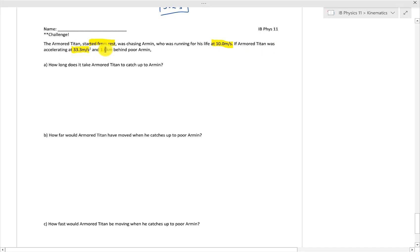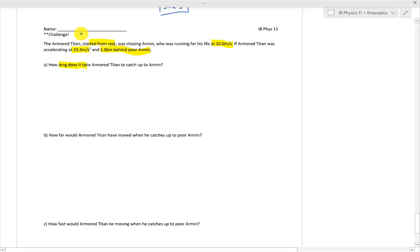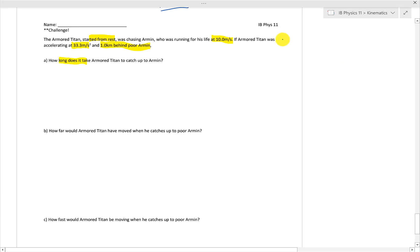If the Armored Titan was accelerating at 33.3 meters per second squared, and just a kilometer behind poor Armin, how long does it take the Armored Titan to catch up to poor Armin? That is a lengthy problem which needs a diagram. Let's draw a picture here.